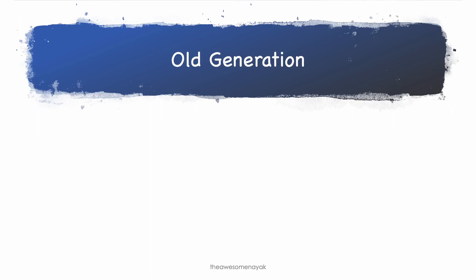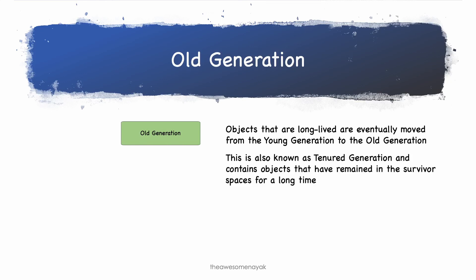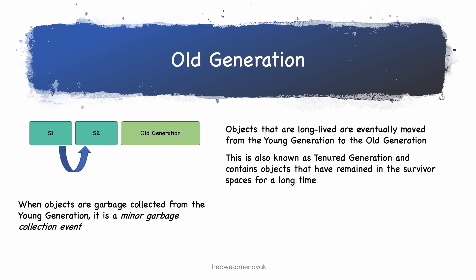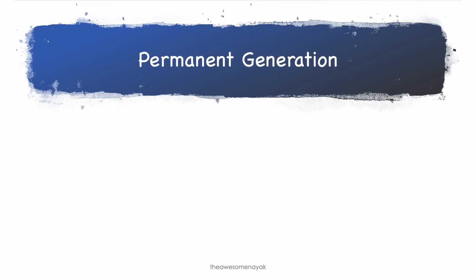The next part of the heap is known as the old generation. Objects that are long-lived are eventually moved from the young generation to the old generation. This space is also known as the tenured generation and contains objects that have remained in the survivor spaces for a very long time. Usually there is a threshold defined that decides how many garbage collection cycles an object can survive before it is moved from the survivor space to the old generation. When garbage is collected from the old generation, it is called a major garbage collection event.